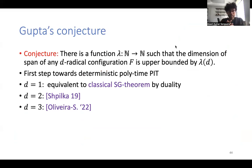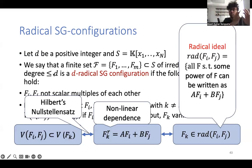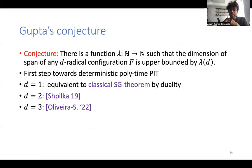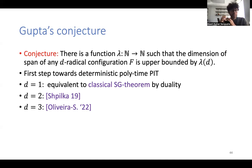The main conjecture of interest was made by Gupta in 2014: there exists a function λ such that whenever we take a degree-d radical Sylvester-Galai configuration, the dimension of the span is upper bounded by λ(d). The bound depends only on the degree d, not on the ambient space or number of polynomials. When d equals one — just homogeneous linear polynomials — this is equivalent by duality to the classical Sylvester-Galai theorem. The d=2 case was proven by Shpilka in 2019, and d=3 by Oliveira and myself in 2022.